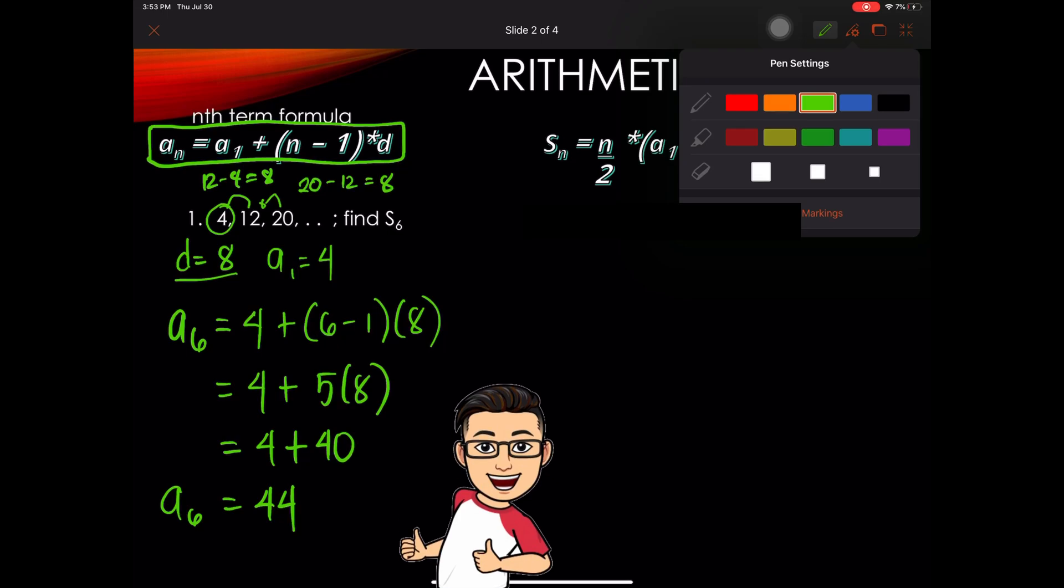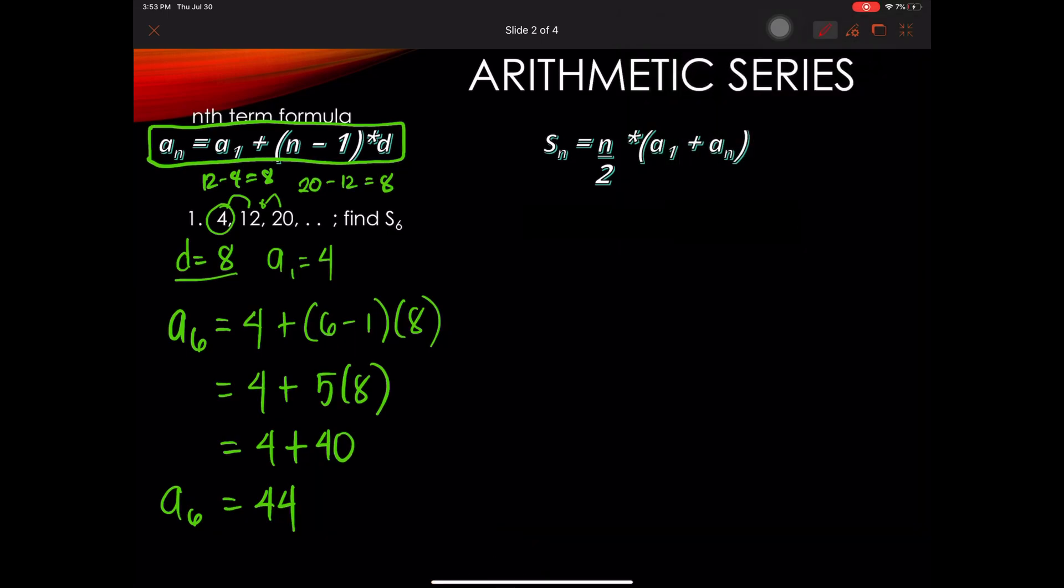Now that we know the 6th term of this arithmetic sequence, we can now get the sum of the first 6 terms. So that goes by S sub 6 is equal to n, which is 6 over 2, times the first term, 4, plus the last term, 44.